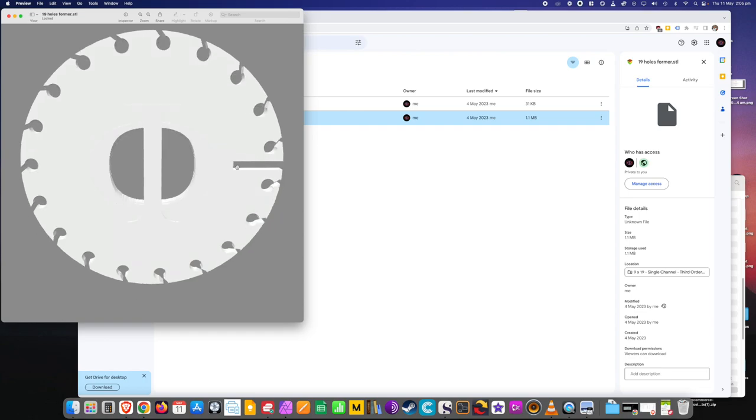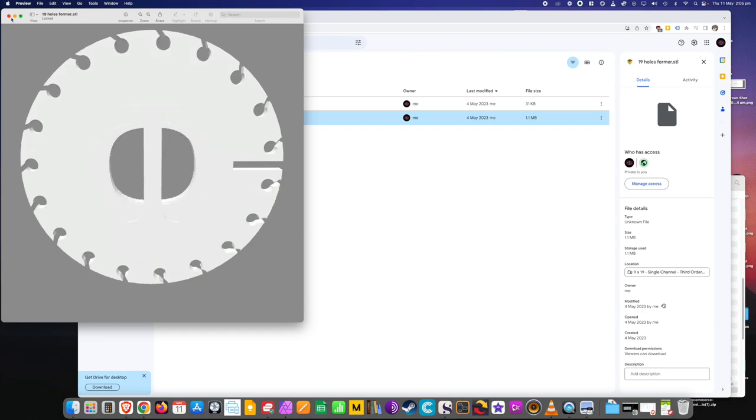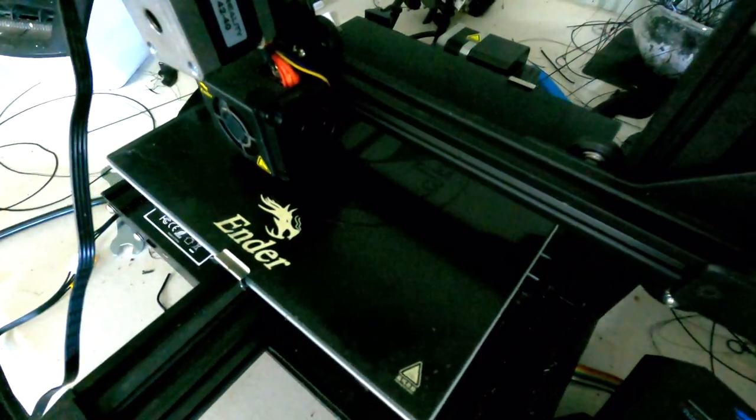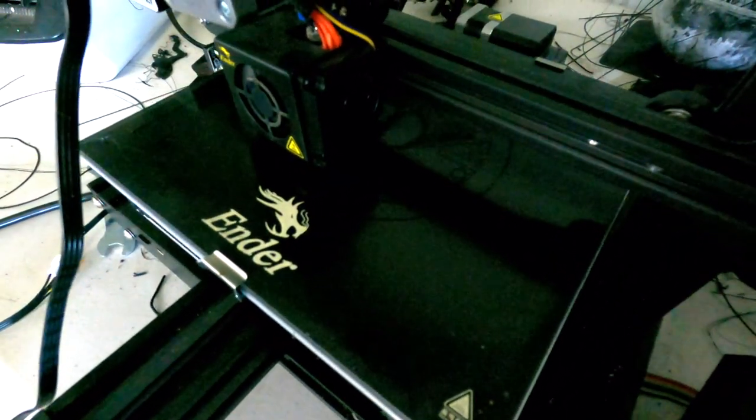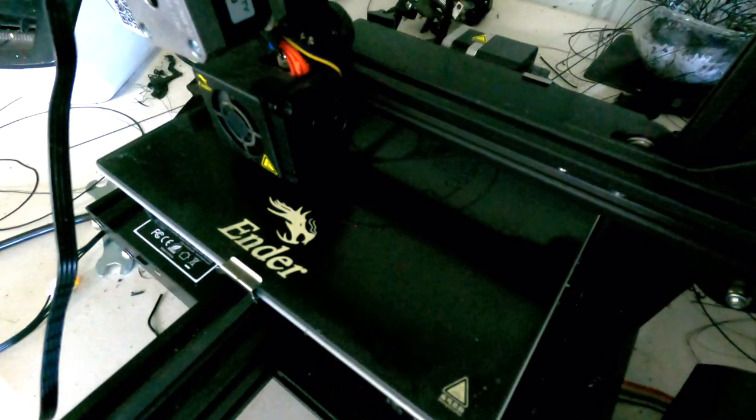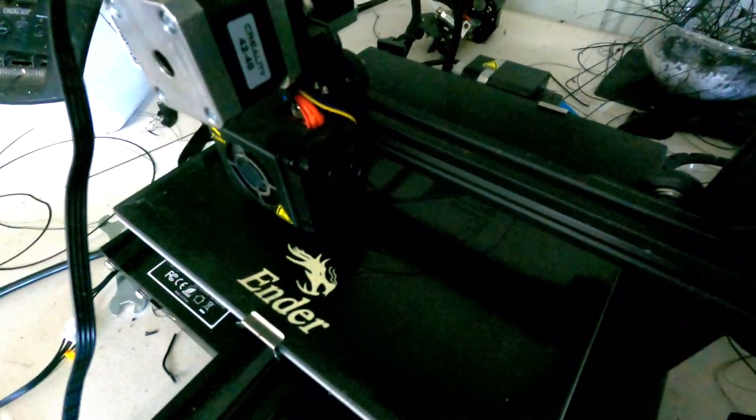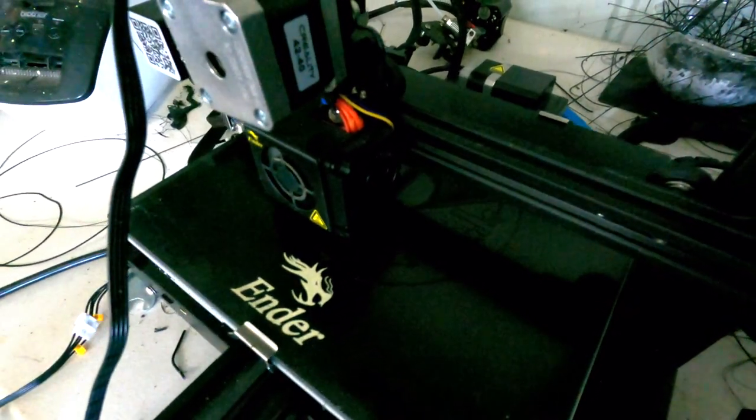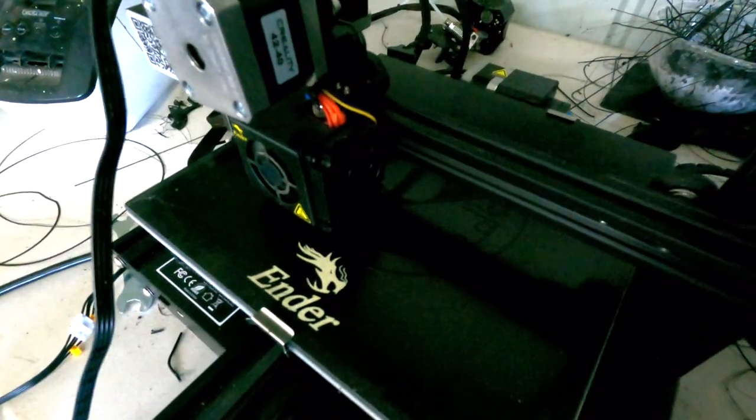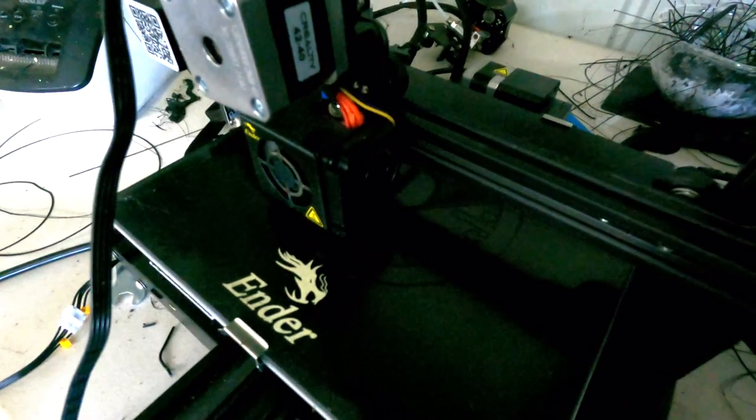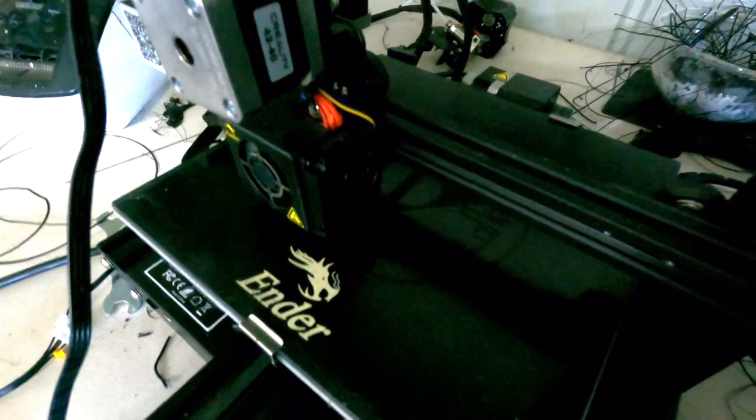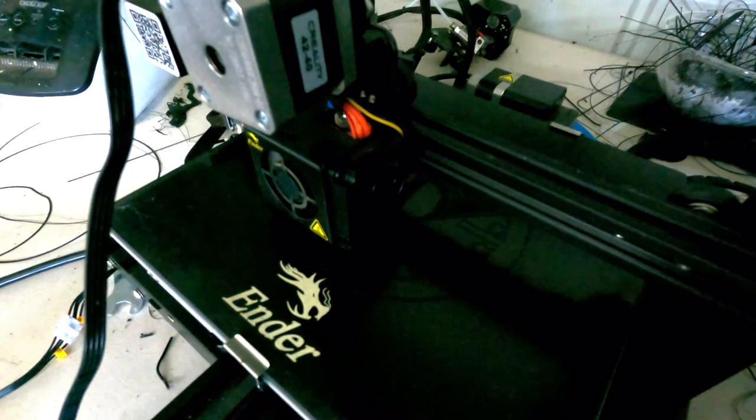And that'll slide on to this ring here. So you shouldn't have to do anything to those STL files to cut them. They're just a flat file. Make sure they're laying flat on the build plate. Otherwise, you can go ahead and print one ring and nine of these formers, and then we'll put them together once they're done.